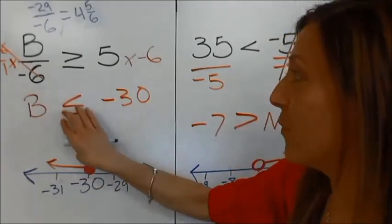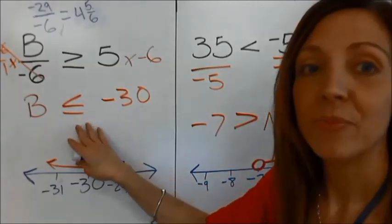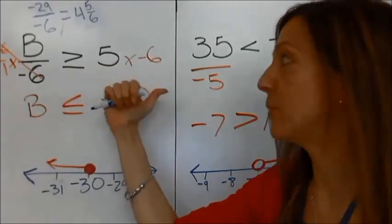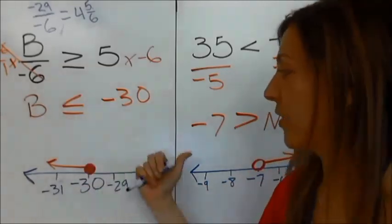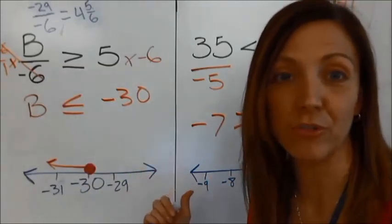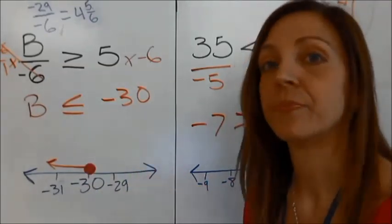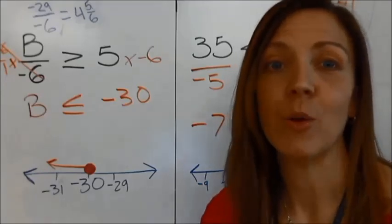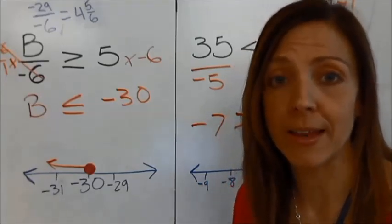So again, if you would not have flipped your sign, if you would have kept it this way, then your arrow would be pointing to the right, and your solutions would be incorrect. That's why you need to flip your sign when you divide or multiply by a negative number.